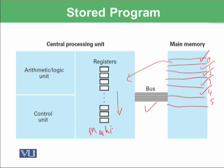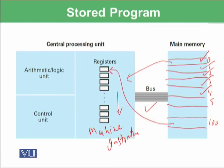The machine instruction is then decoded to understand what it means and what the program wants to do. The first instruction, for example, was to get data from RAM. That data would be stored somewhere, for example at address 1, 0, 0. This instruction fetches that data into one of the registers, and so on.